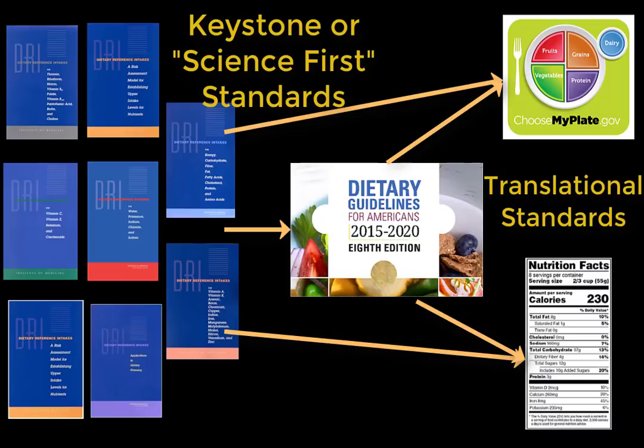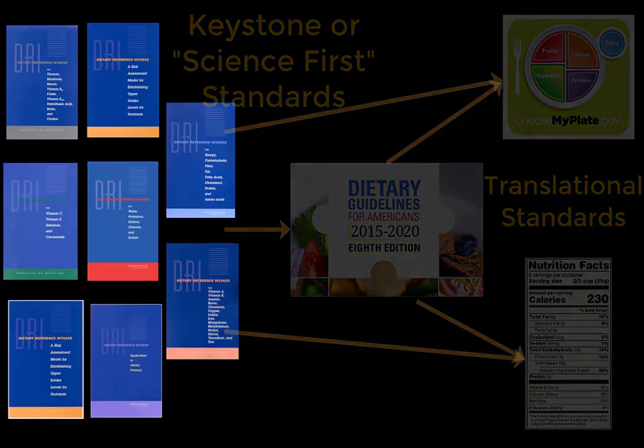This graphic provides a visualization of how these different food and nutrition standards relate to each other. Now I'm going to provide some information about the historical context of how each one was developed. We're going to start with the DRIs, or the dietary reference intakes, but to understand their historical context we need to go back and talk specifically about part of the DRIs called the RDAs — the recommended dietary allowances.